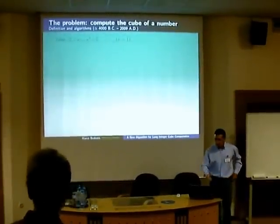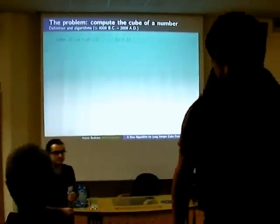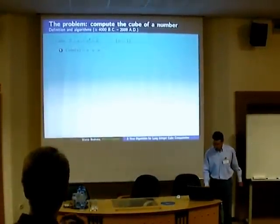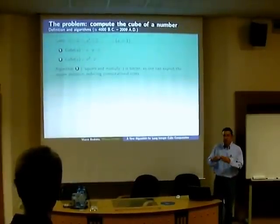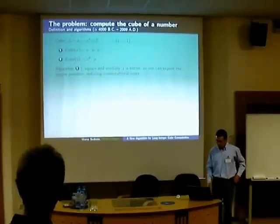Actually, the thing to do is quite old. You have a long integer U, and you want to compute the cube. When U has many digits, let's say many, this is the definition. You can find it even on Wikipedia. And actually, the algorithm 2, that is square and multiply, is what everyone uses.